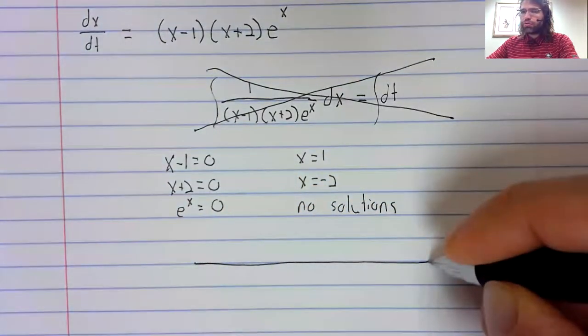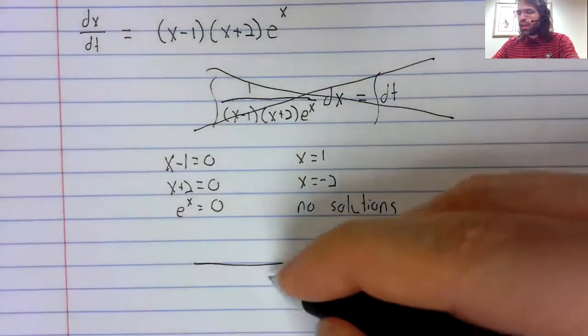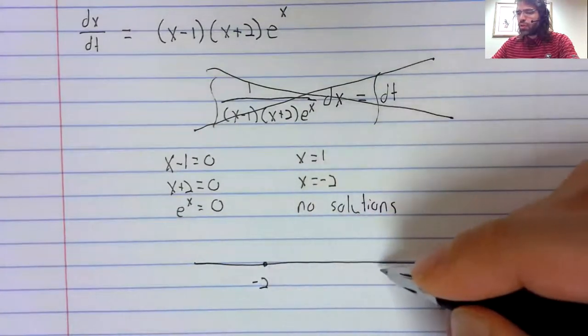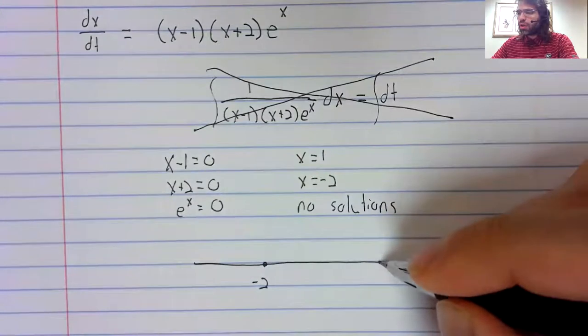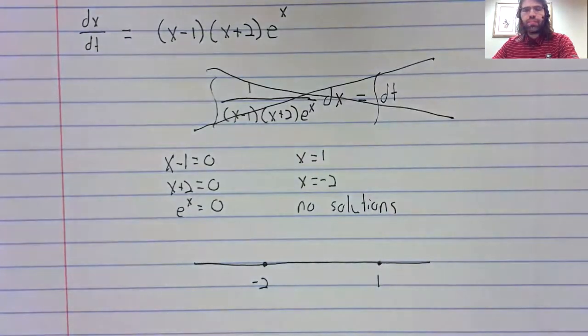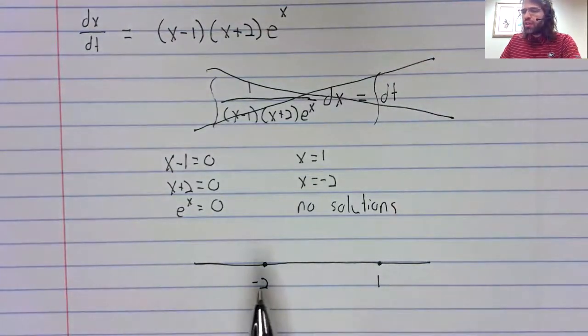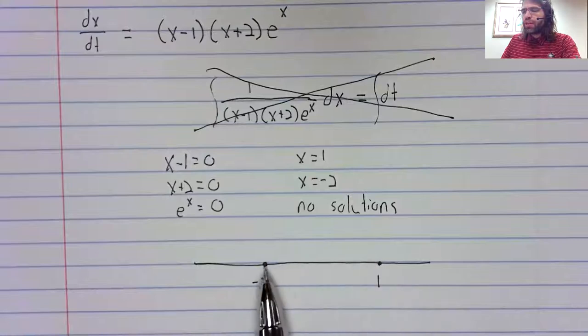We'll create a number line and we'll mark our fixed points. And because this is continuous, these fixed points are the only place where the derivative can change sign.